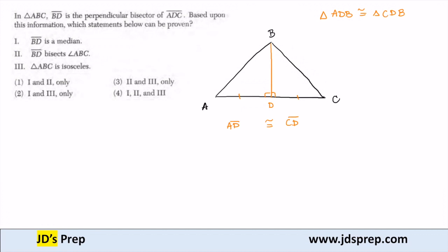And how do I know that? I know that AD is congruent to CD because that was given. I know that angle ADB is congruent to CDB because they're both right angles.